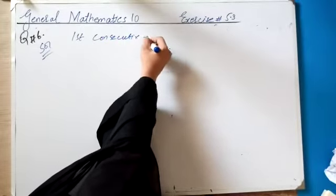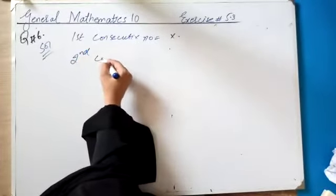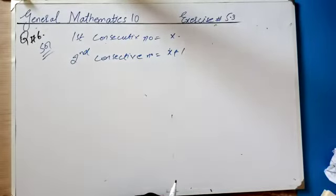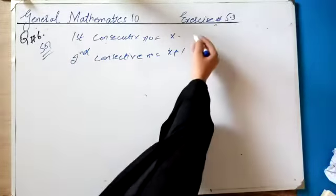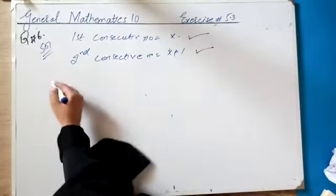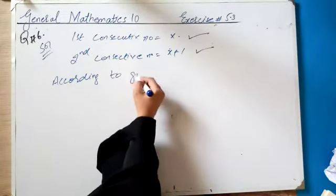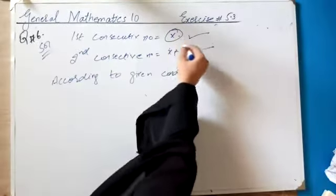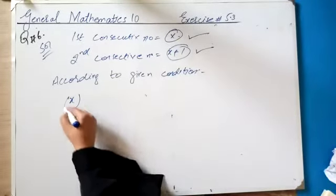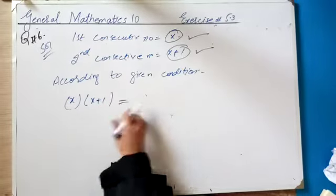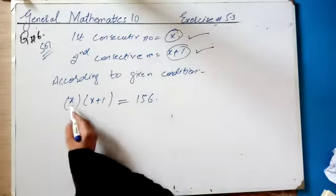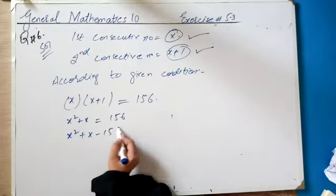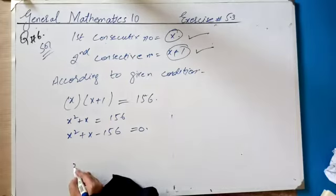First consecutive number = x and second consecutive number = x + 1. According to the given condition, product of two consecutive numbers: first × second = x × (x + 1) = 156. Multiplying: x² + x = 156, so x² + x − 156 = 0. From here solve it — you will get two answers for x.